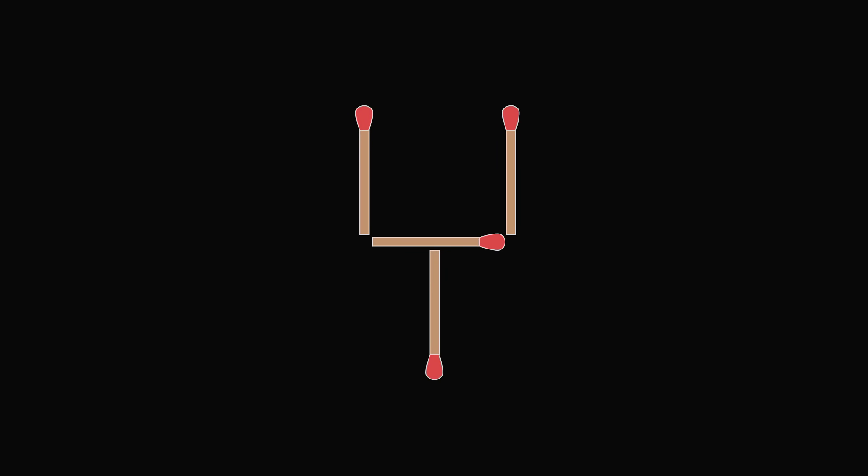Puzzle 5. Here we have 4 matchsticks that are arranged in the shape of a cup. A coin is inside of this cup. The challenge is to move exactly 2 matchsticks, so the coin is outside the cup. But the resulting shape must also be the same shape of the cup. So, how do you do it?